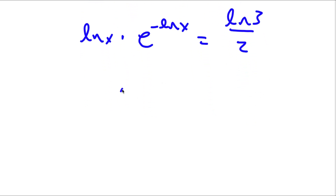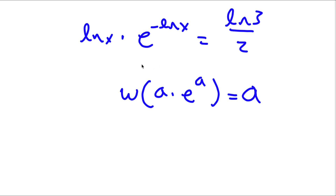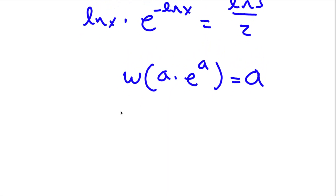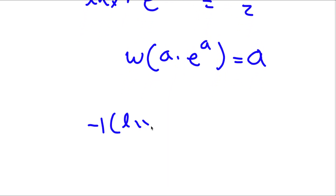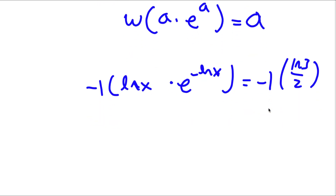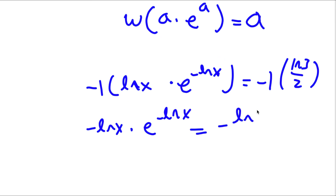Now, the Lambert W function of something in the form a times e to the power of a equals a. Before applying it, I'm going to multiply both sides by negative 1. So now I have negative ln x times e to the power of negative ln x is equal to negative ln 3 over 2.